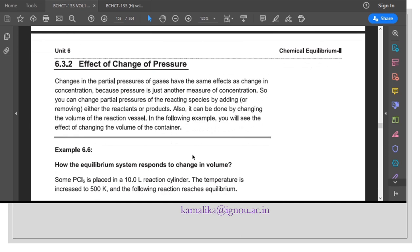Section 6.3.2, effect of change of pressure. Changes in the partial pressures of gases have the same effect as changes in concentration, because pressure is just another measure of concentration. You can change partial pressure of the reacting species by adding or removing either the reactants or products.